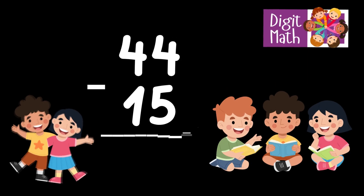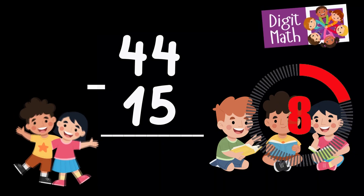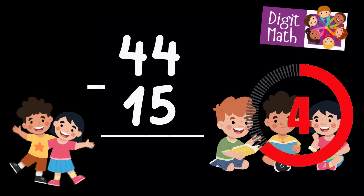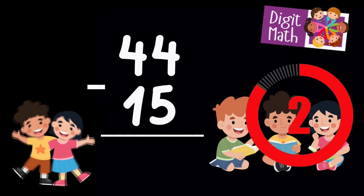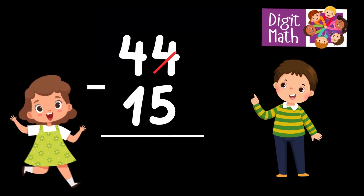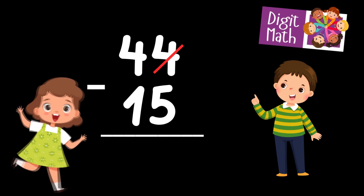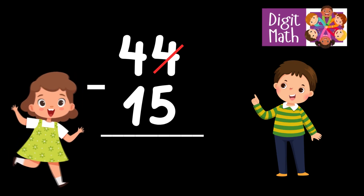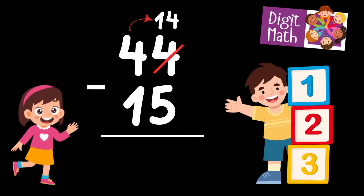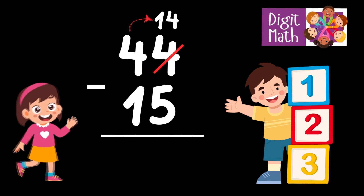44 minus 15 is... Time to think. In the Units column, we have 4 minus 5. Since 4 is less than 5, we need to borrow from the Tens column. In the Tens column, we have 4. We take 1 from the Tens, leaving 3 in the Tens column and turning the Units column into 14.